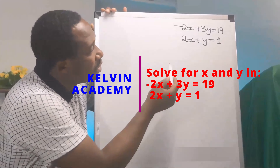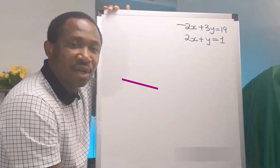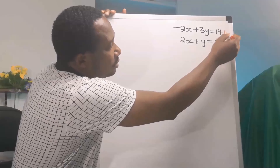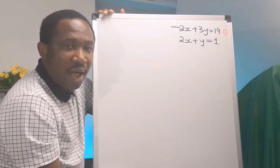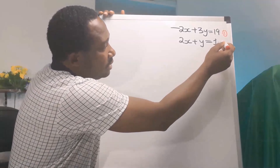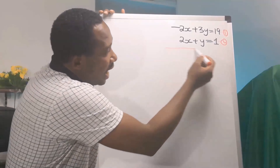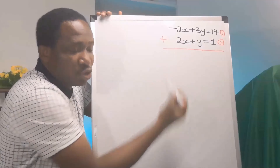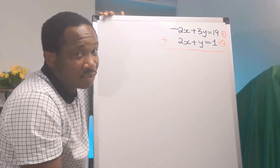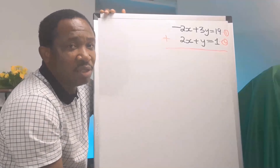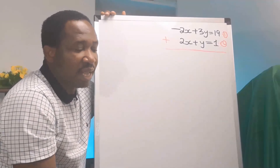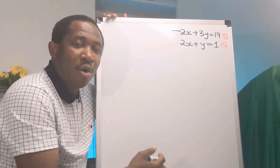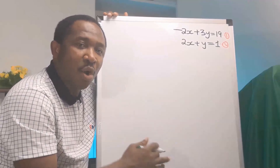We have minus 2x plus 3y equals 19 — that is equation 1. We have 2x plus y equals 1 — and this is equation 2. We can add these two and eliminate x to get y and later substitute. However, the aim of this video is to use the substitution method. Hence I will use substitution method: choose from equation 1 or equation 2 and make x or y the subject.